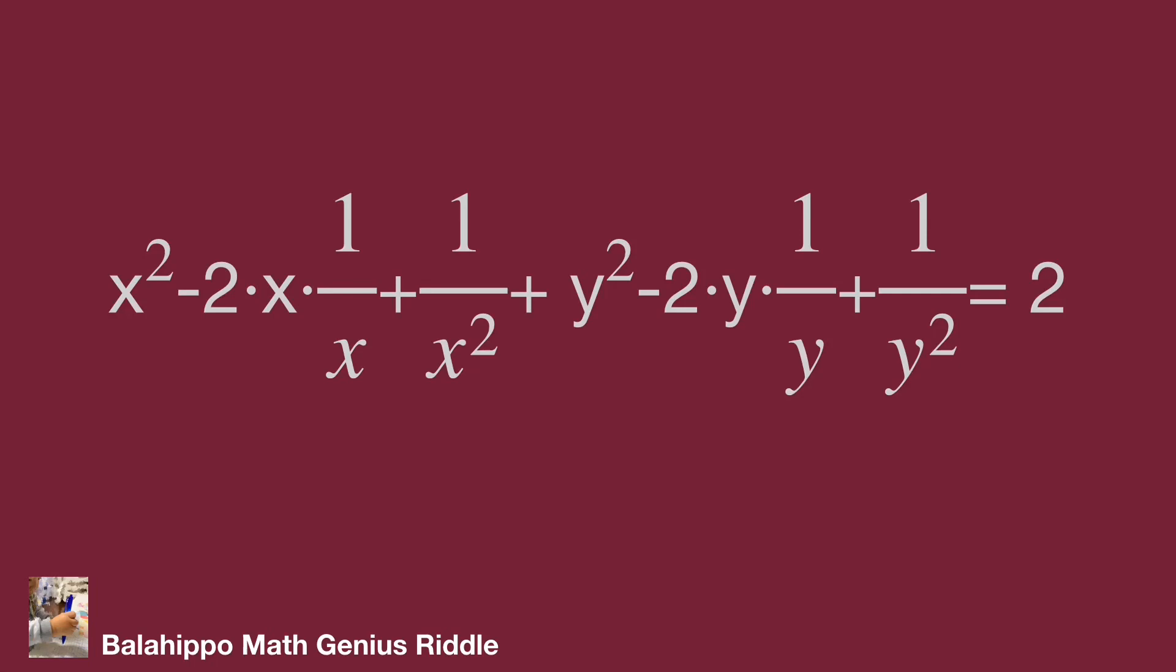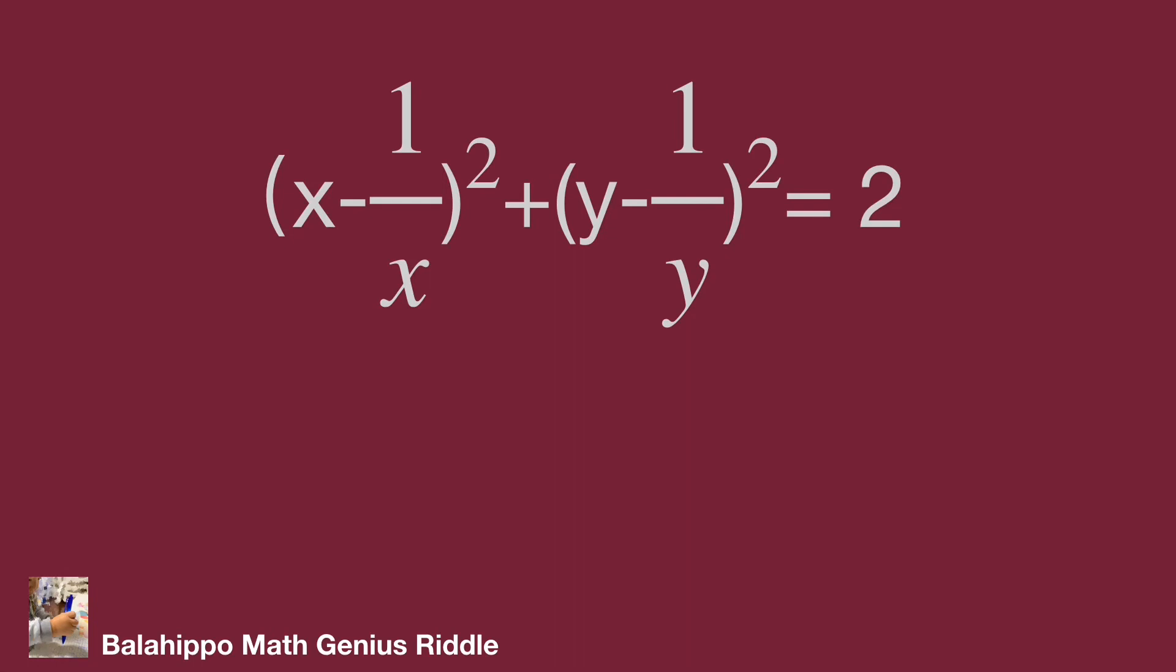So we have quantity x minus 1 over x squared plus quantity y minus 1 over y squared equals 2.